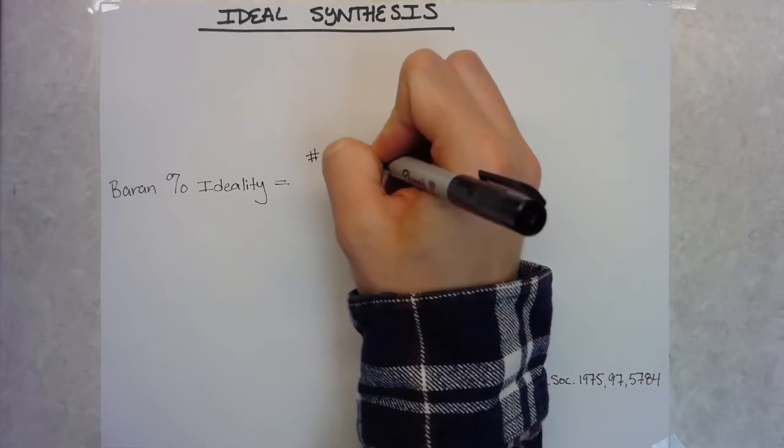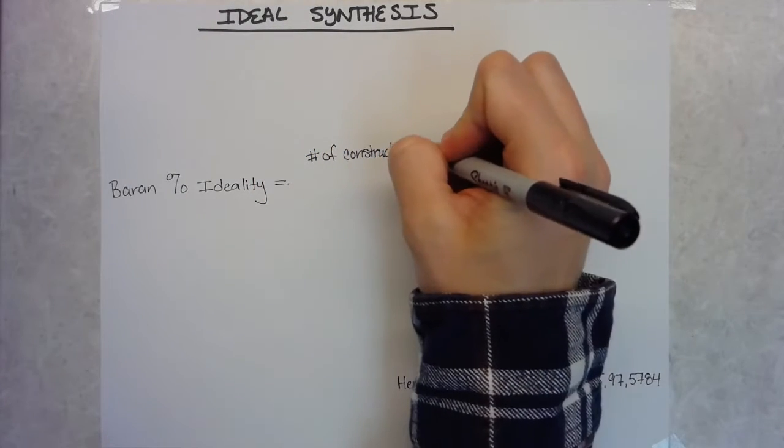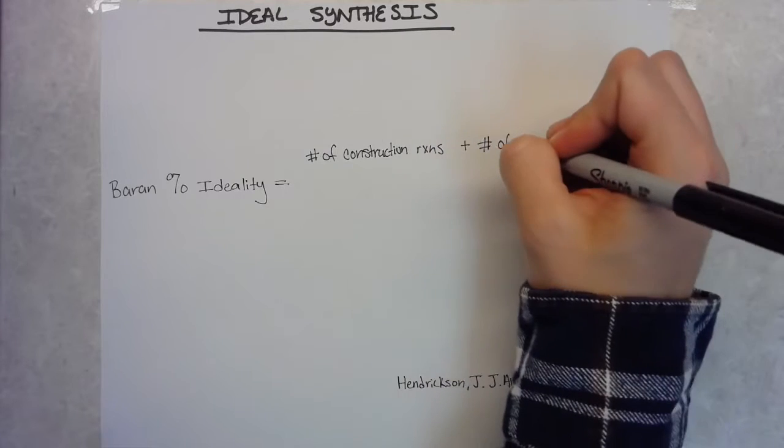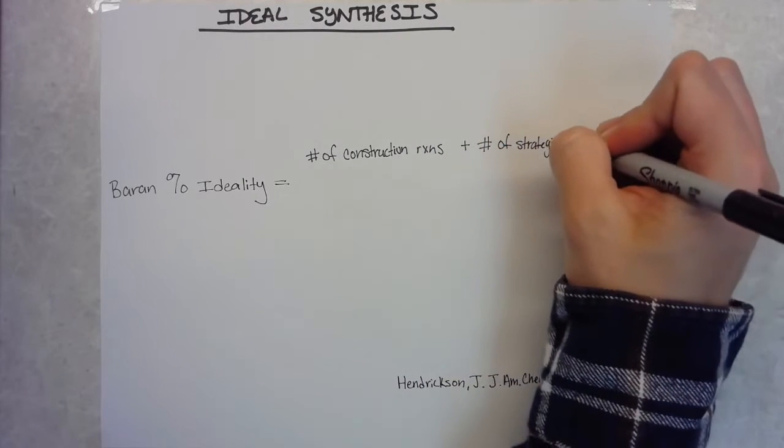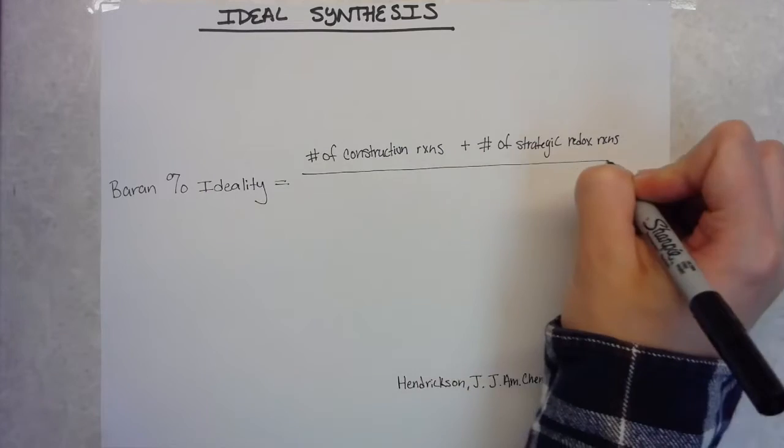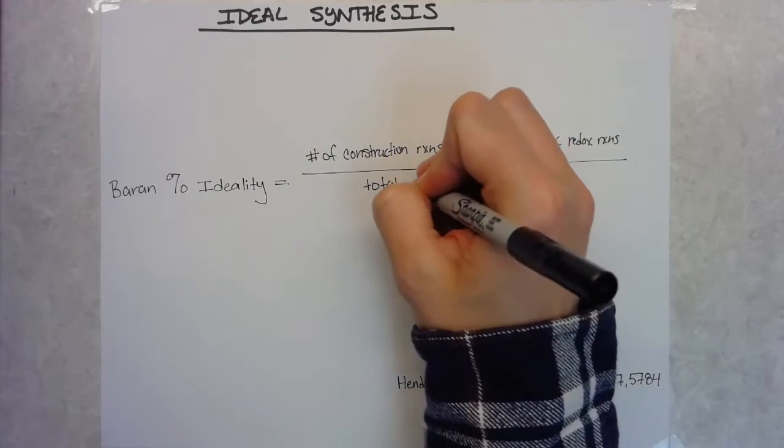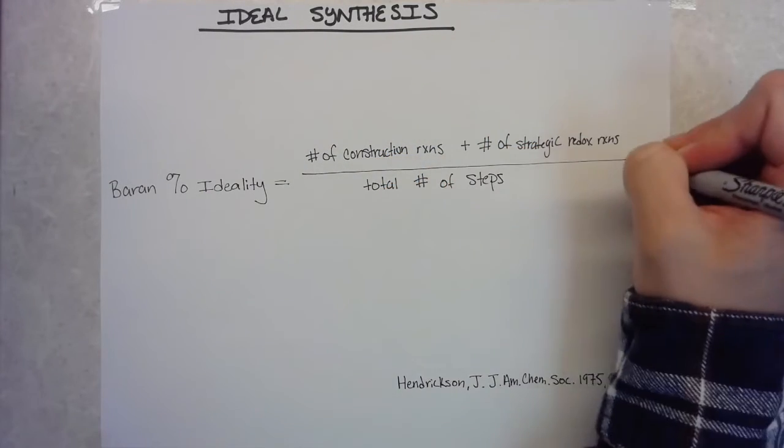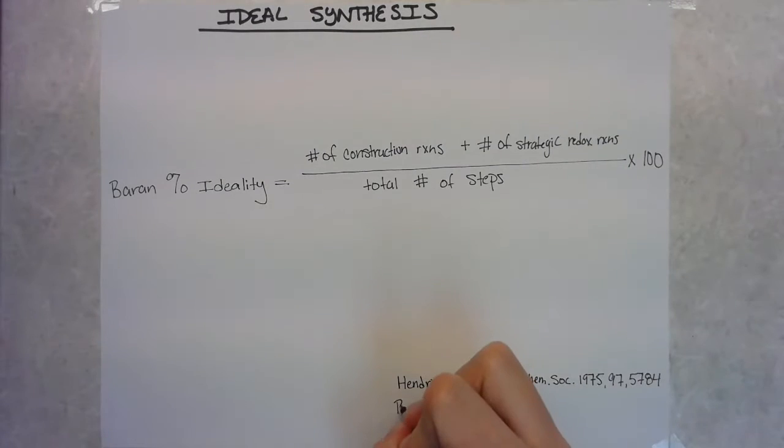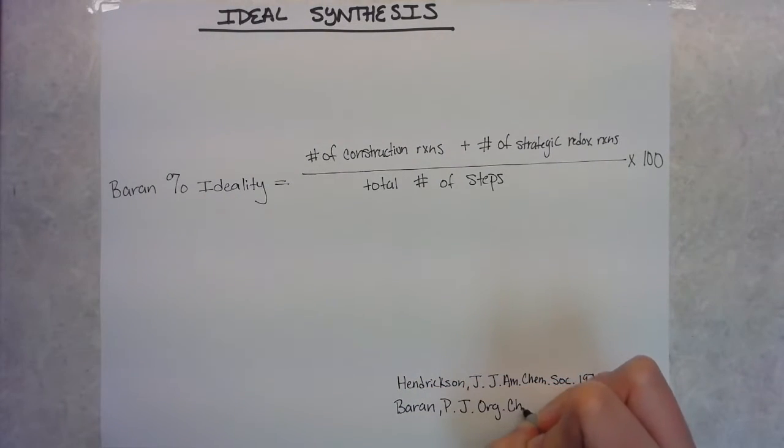Phil Barron even goes as far as to quantify this ideality. So he even has this equation where he has the number of construction steps plus the number of strategic redox steps over the total steps is like your percent ideality, which is interesting in the context of this paper, because this is deconstruction, where ideal is considered as construction.